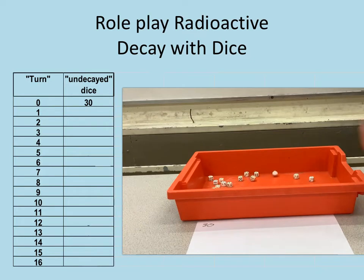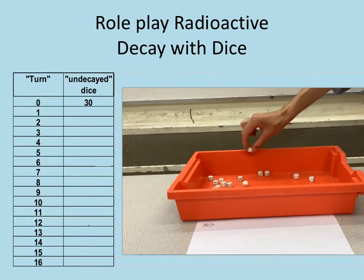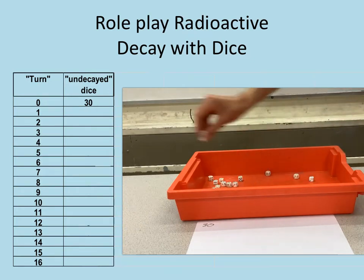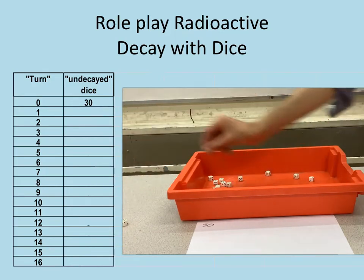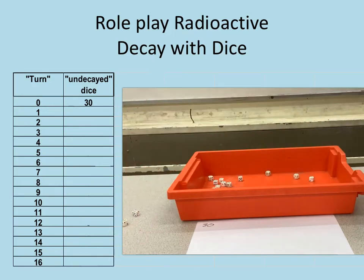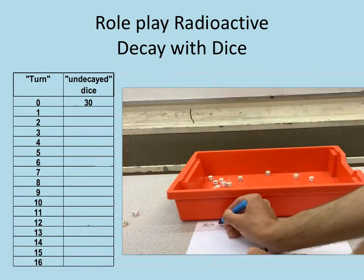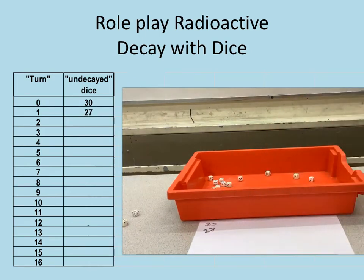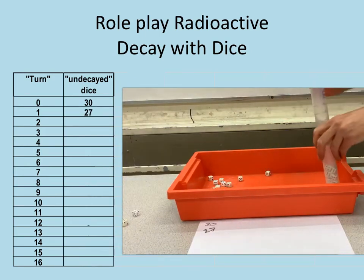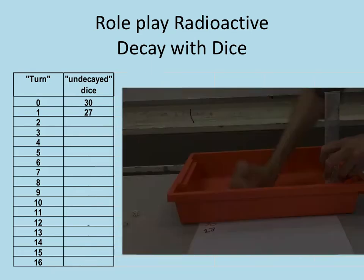On my first roll I've got three which have come up as a six, which gives me 27 left. So I'll put those 27 that haven't decayed back in here and repeat the operation again.